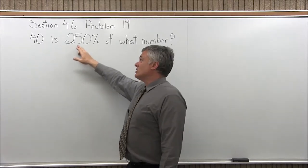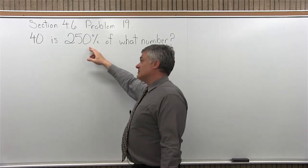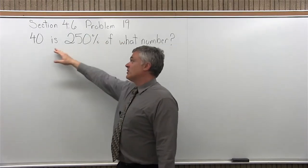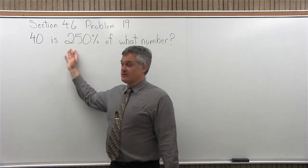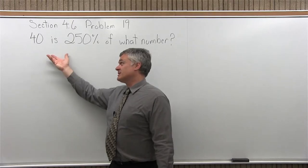So, if 40 is more than 200 percent of a number, the number we're finding must be quite a bit less than 40, because 40 is 100 percent of 40, so it's 250 percent of something less.